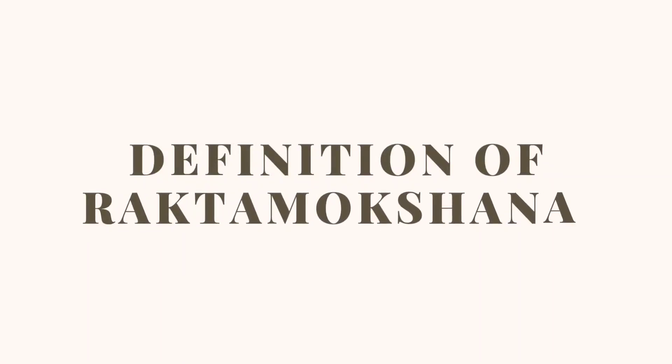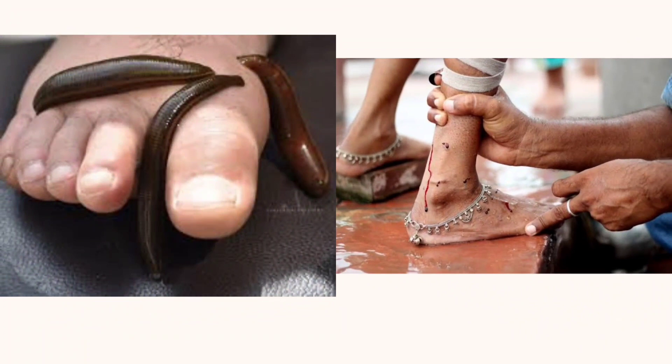Definition of Rakthamokshana: Rakthasya mokshanam — Rakthamokshana. Letting out impure blood from the body is known as Rakthamokshana.